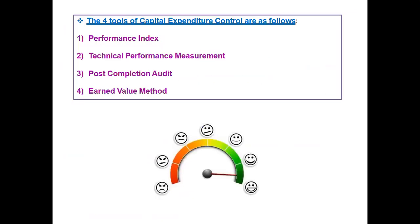There are four tools of capital expenditure control, though three are given in the syllabus. Those three are: performance index, technical performance measurement, and post-completion audit. The fourth one — earned value method — is not included in your syllabus but we will cover it for information. These three tools — performance index, technical performance measurement, and post-completion audit — are the capital expenditure control tools.